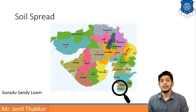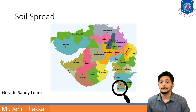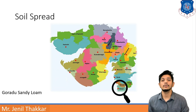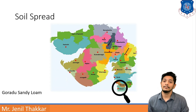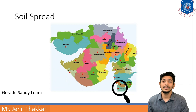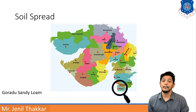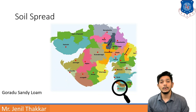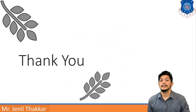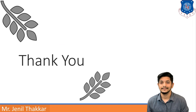These are basic approximations of soil spread in different areas of Gujarat. It is not fixed that only one type of soil exists in any given area — there may be variations. These are approximated areas and types. We will discuss the next chapter in the next video. Thank you.